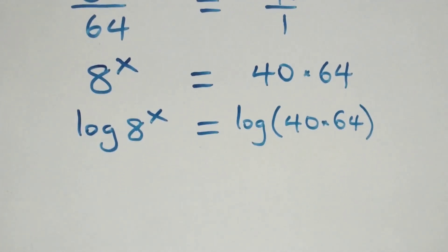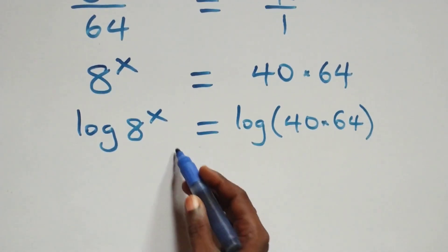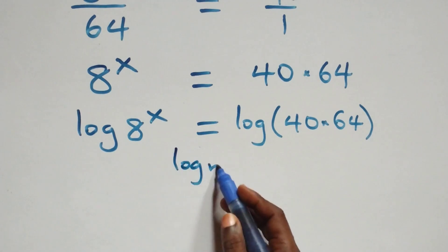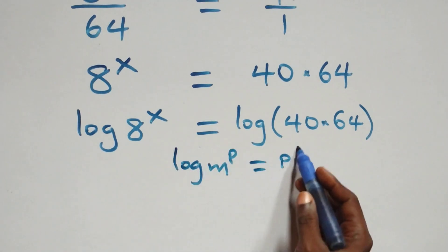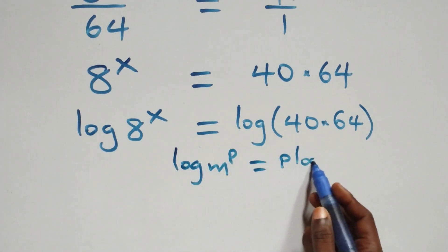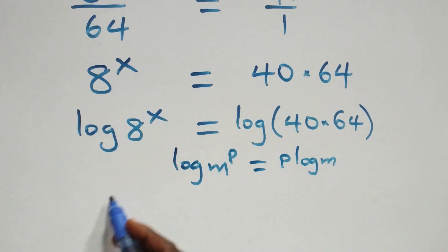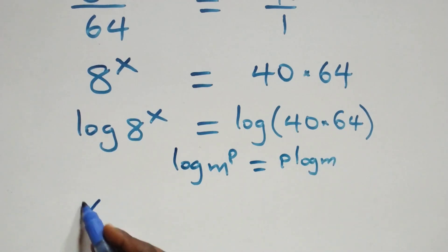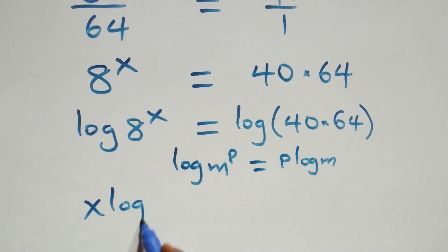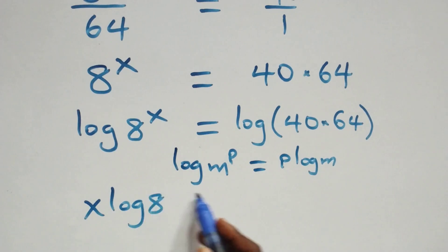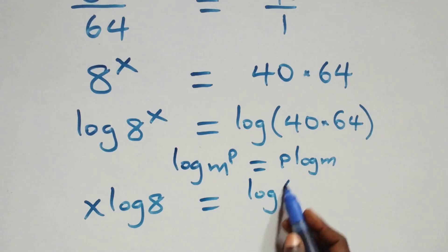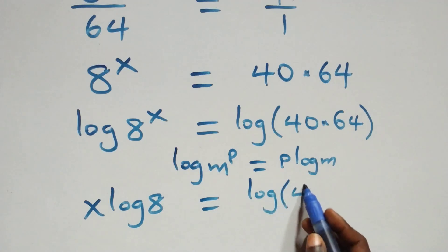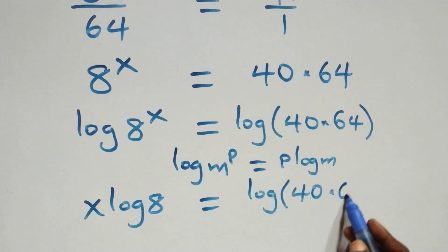From here we apply the power rule of logarithms. We have log m raised to power p, which is the same thing as p times log m. So this becomes x times log 8 equals log of 40 times 64.